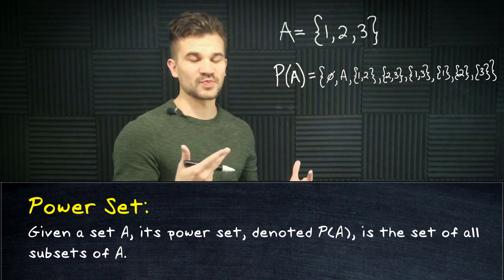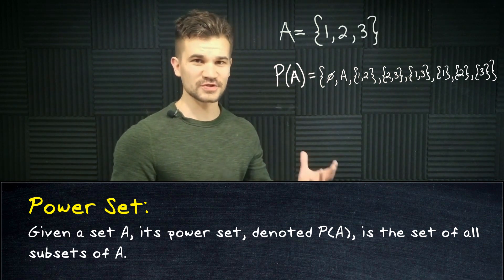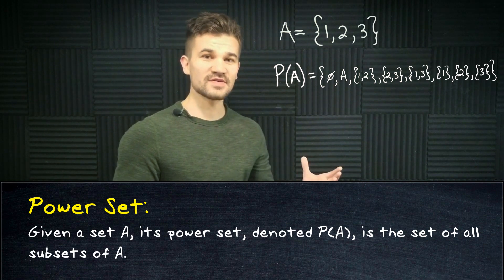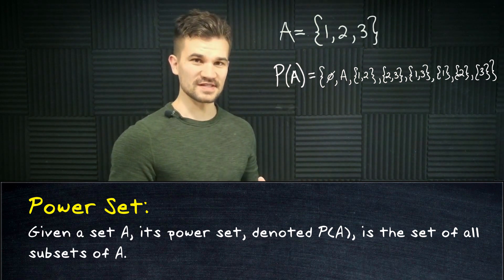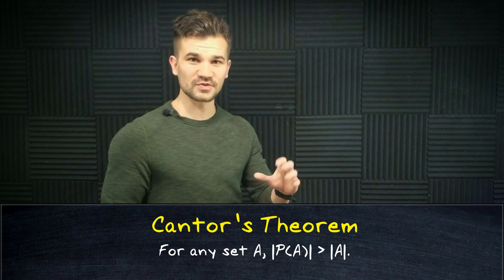So that means it's pretty obvious that if you have a finite set and you take its power set you're always going to get a set with a larger cardinality. But it turns out that this is even true for infinite sets. If you take the power set of an infinite set you get a new set with a larger cardinality and that's called Cantor's theorem.